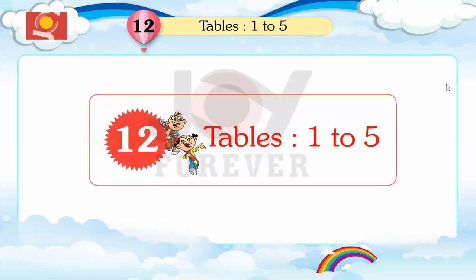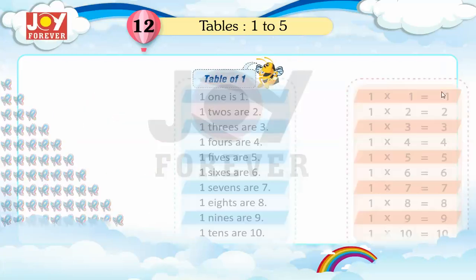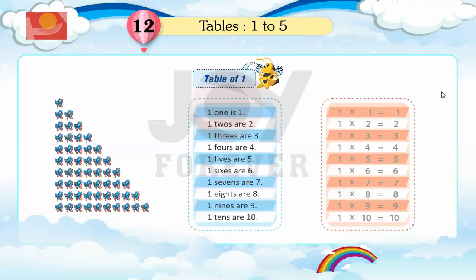Chapter 12: Tables 1 to 5. Table of 1: 1 one is 1, 1 two are 2, 1 three are 3.